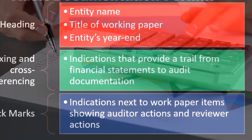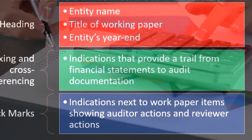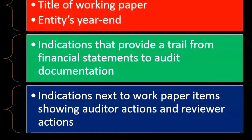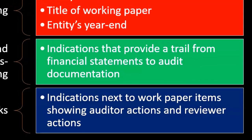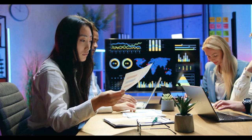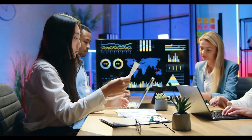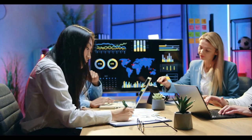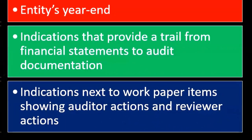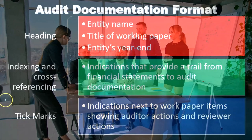Tick marks are indications next to working paper items showing auditor actions and reviewer actions. This will become more apparent when we actually put together working papers for particular assertions and account balances. Different organizations may use different methods for tick marks and for indexing and cross-referencing, but we need some indication of them. We need to know the entity, the title, the year end, the account we're working on, and who is preparing and reviewing the information. CPA firms will typically have a systematic set of formats for indexing, cross-referencing, and tick marks.